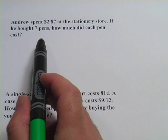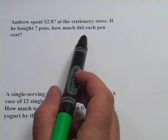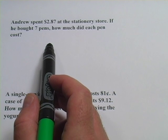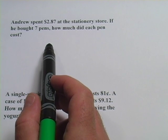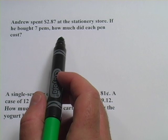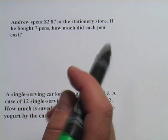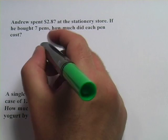The first one says, Andrew spent $2.87 at the stationery store. If he bought seven pens, how much did each pen cost? So the unit here is pens and I'm trying to figure out how much per pen. Well, per, that's another word for divide.